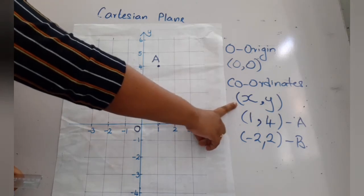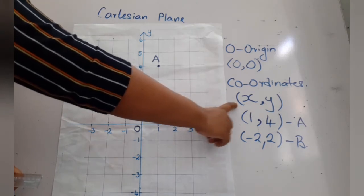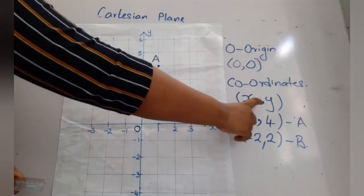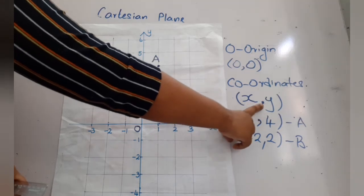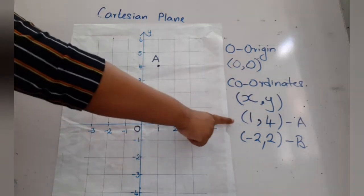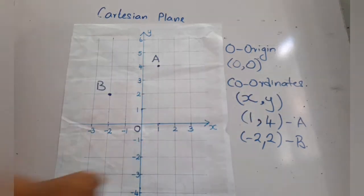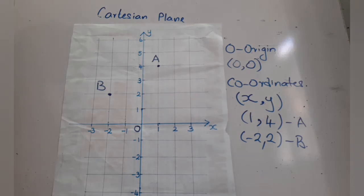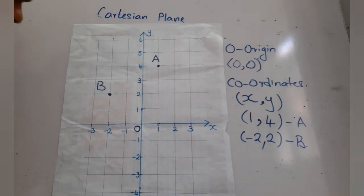Coordinates must be written in the form x comma y — x should be written first and y second. That is what we learned today.